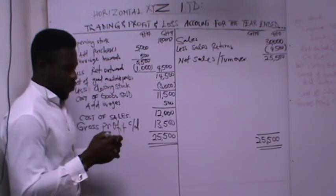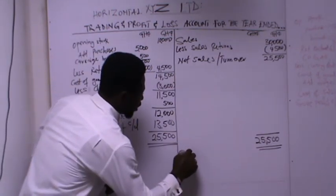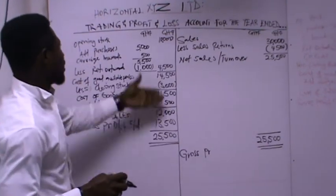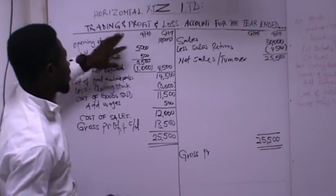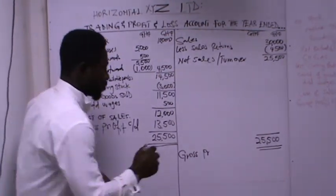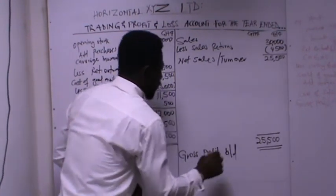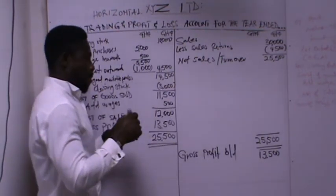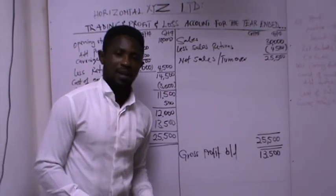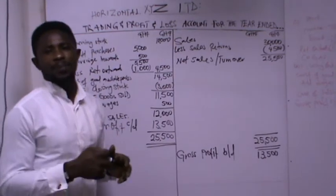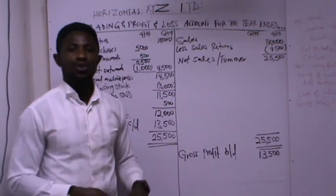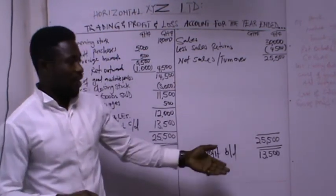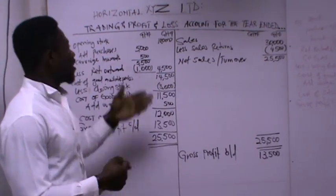We call it gross profit carried down (c/d), and we bring it down to the profit and loss section, which is the continuation of the trading account — because we prepare them together as 'Trading and Profit and Loss'. Both sides of the trading section balance at 25,500 Ghana cedis. We are now done with the trading section.